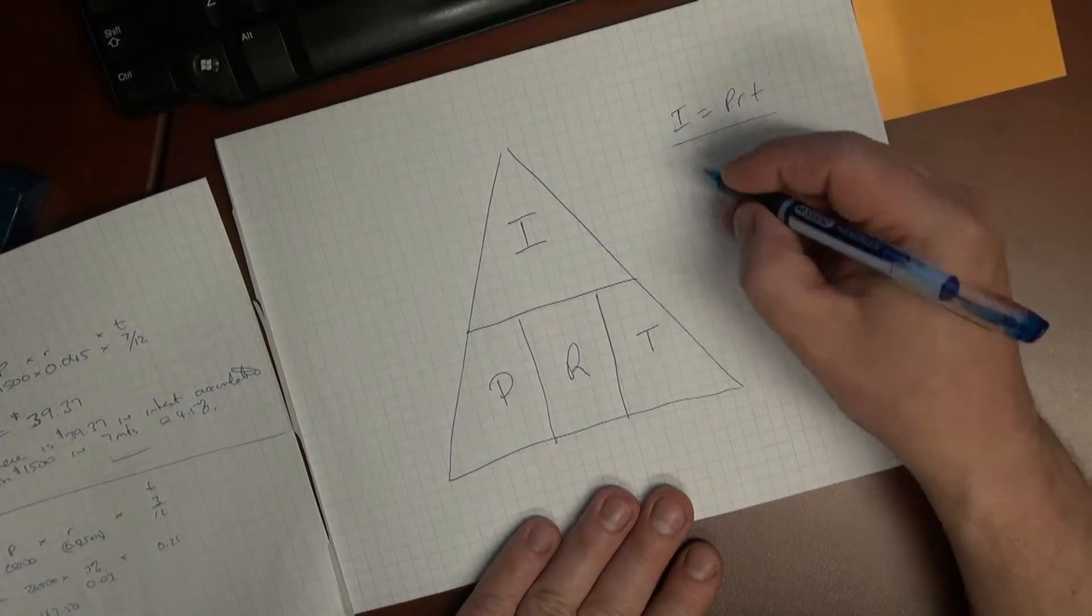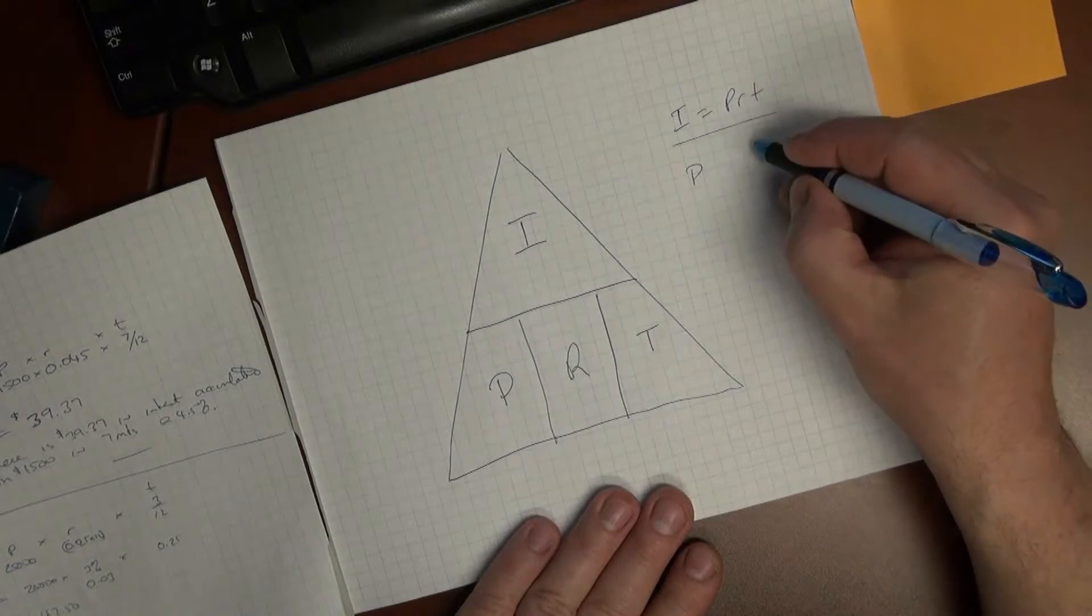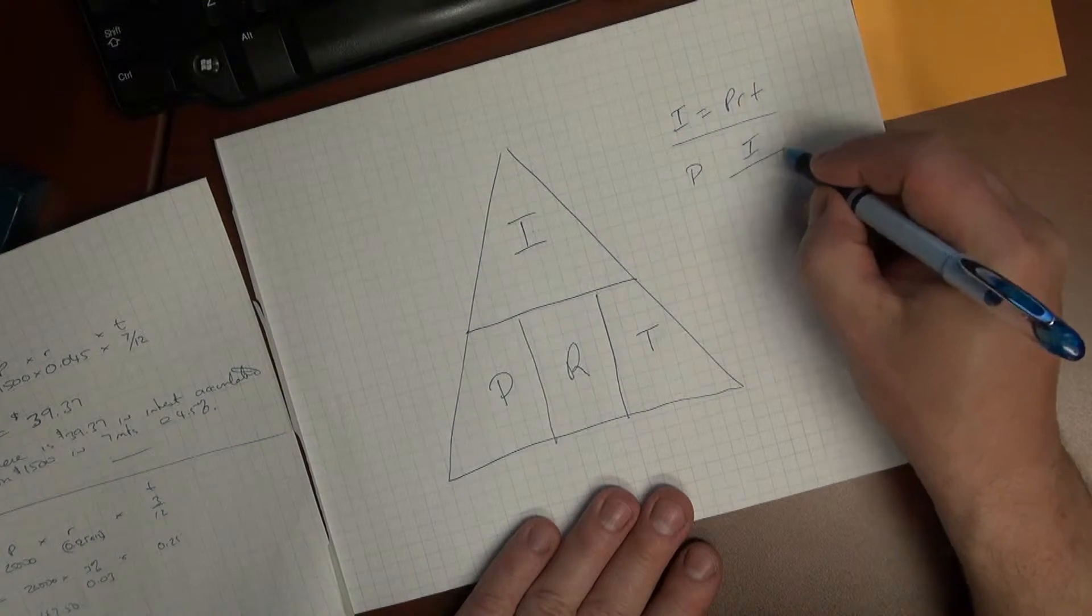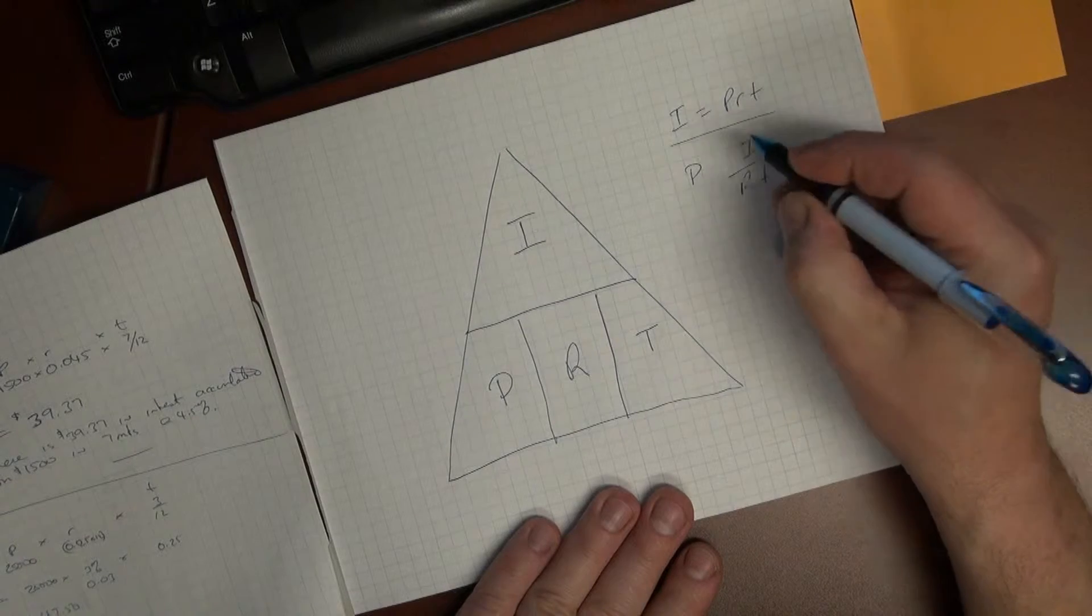If you're looking for P, for example, the formula is I divided by RT.